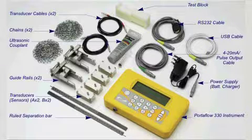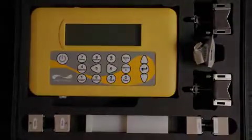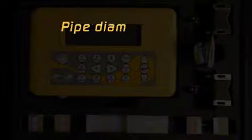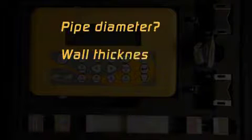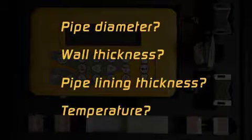First steps begin with how to program the flow meter. When programming the unit, you need to know the pipe outside diameter, the wall thickness, the pipe lining thickness if required, and the temperature of the application.